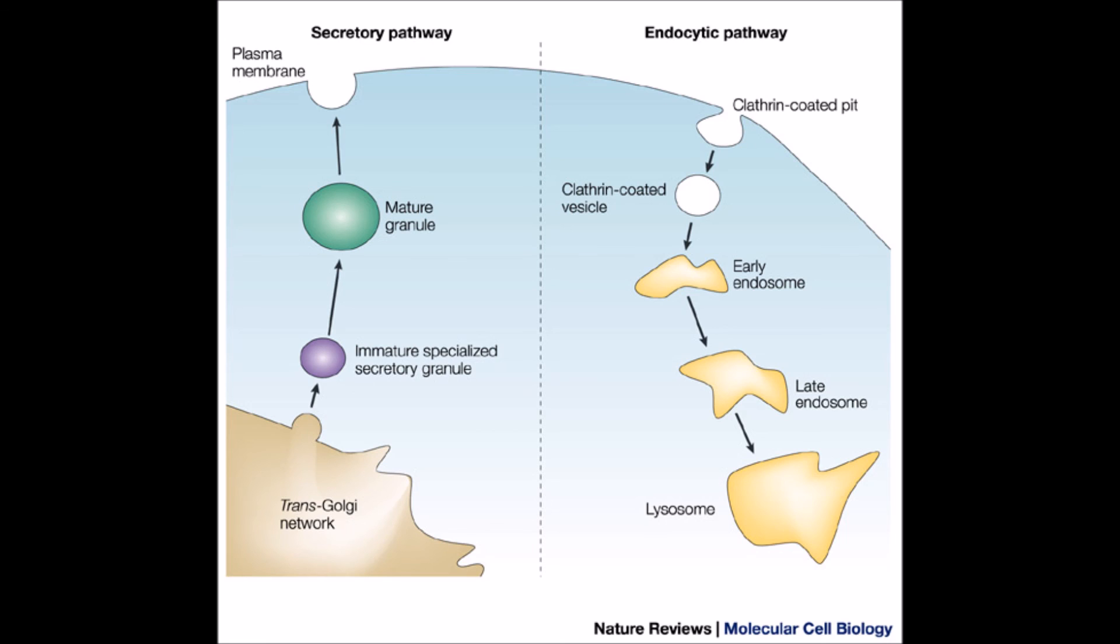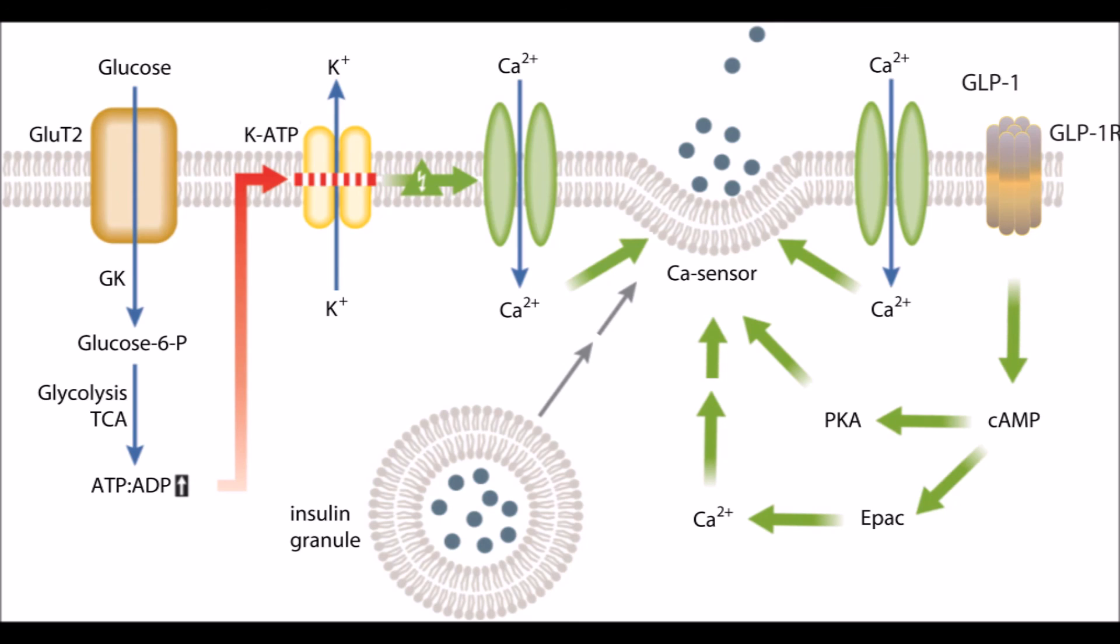Finally, exocytosis of the granules is triggered by the entry of glucose into the beta cell. The secretion of insulin has a broad impact on metabolism.